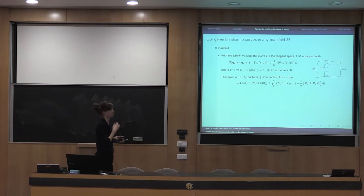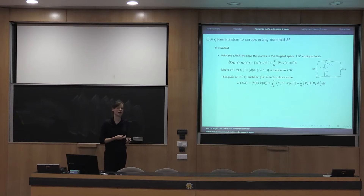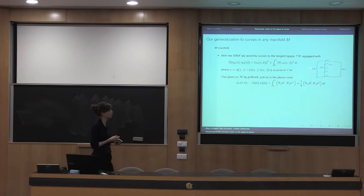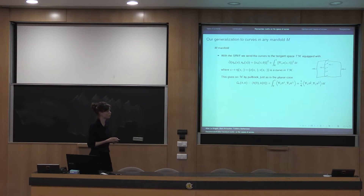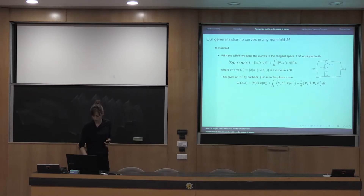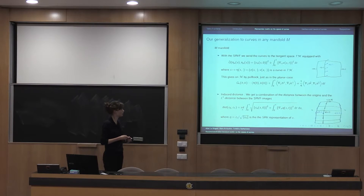We decided to adapt this framework to curves in a general manifold M. We send the curves to the tangent bundle TM-tilde via the same transformation, and equip the tangent bundle with a natural metric. A path eta in the tangent bundle is composed of a path — represented by a surface — in the manifold M, and a vector field V. By pullback, this gives an analogous metric with an additional term involving the origins, which is natural since we're no longer translation-invariant in a curved space. The resulting distance is a combination of the distance between the origins of the two curves and the L2 distance between their square root velocity representations.